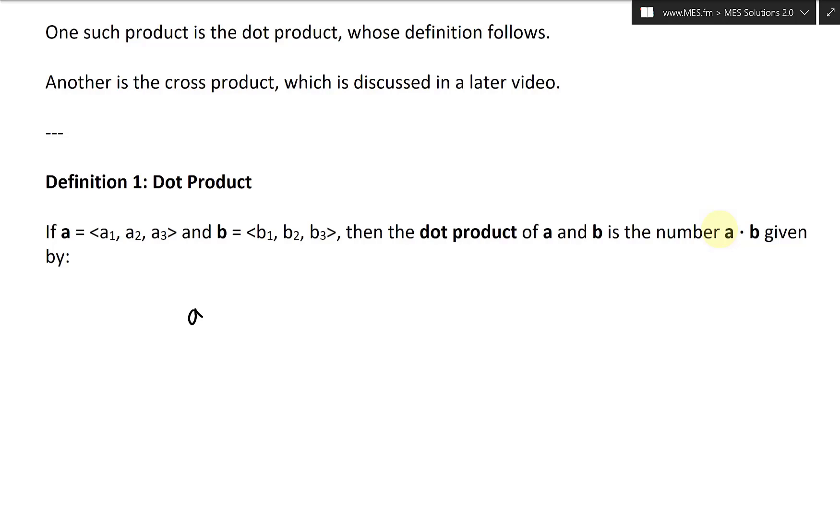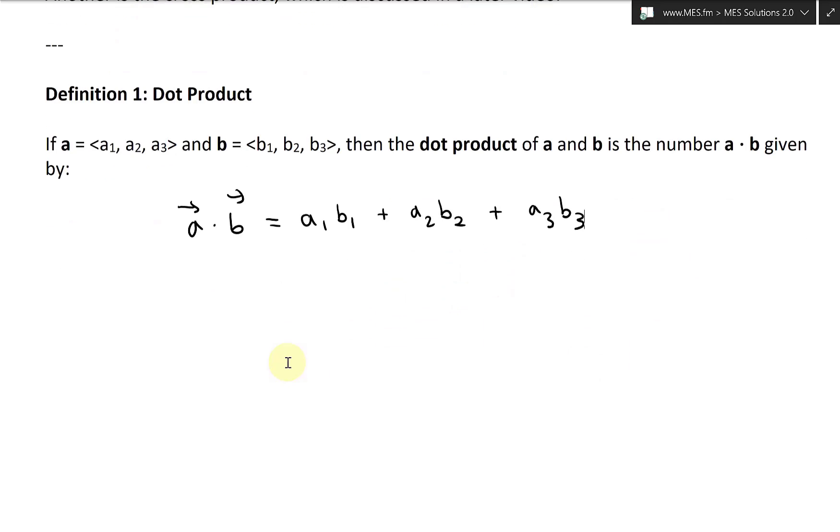You could also write a vector with an arrow on top. I'll write it with arrows when I'm writing with my pen, because it's hard to write with the bold setup. So this is the definition. We're going to have the components multiply: a1 by b1, then a2 by b2, then a3 by b3, and then add all of them up. So we have two vectors multiplying, the dot product of two vectors is just a summation of these three multiplications. In other words, this is just a real number or a scalar.